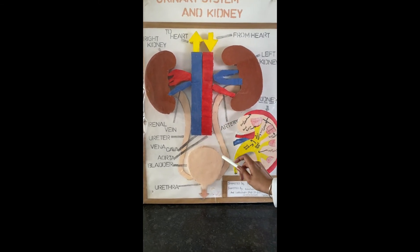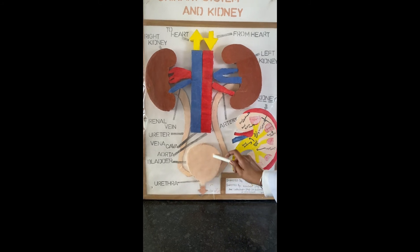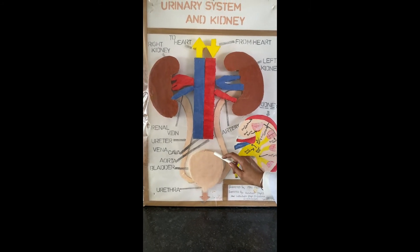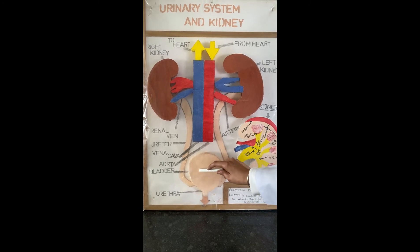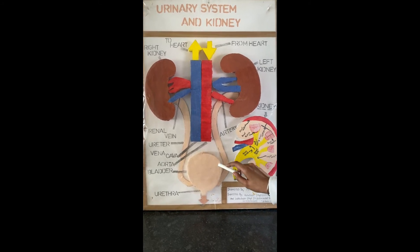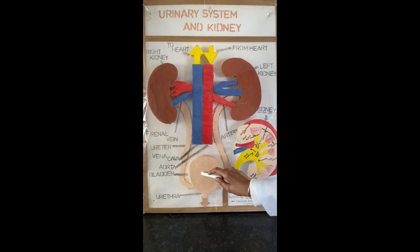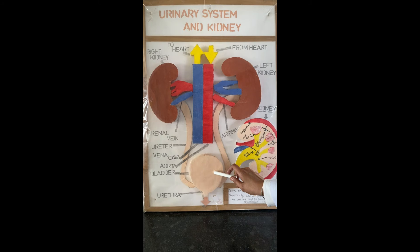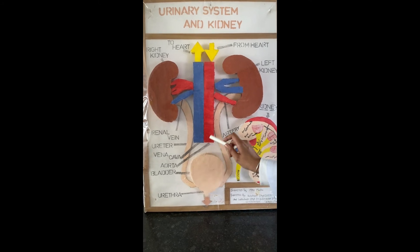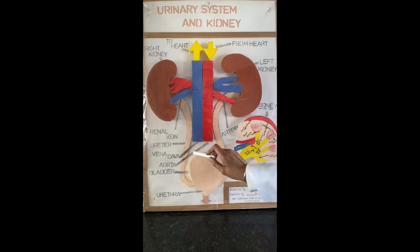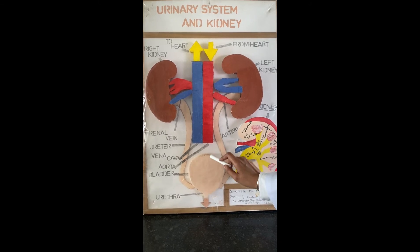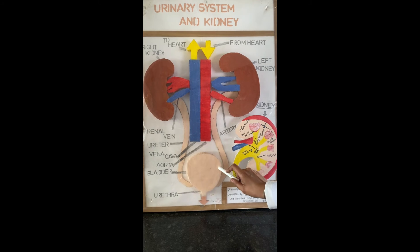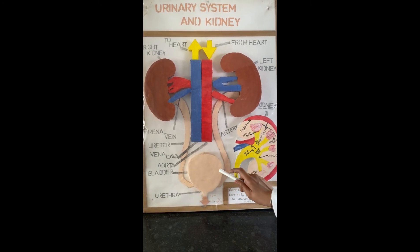Now let us see the main features of the urinary bladder. When the urinary bladder is full — that is when the urine collected is about 400 to 500 mLs — after nerve signals give the command, it contracts. Contraction requires the action of muscles.